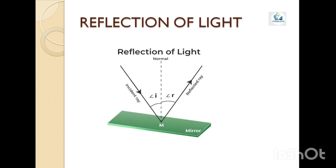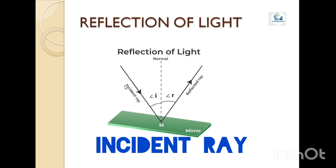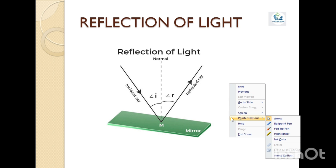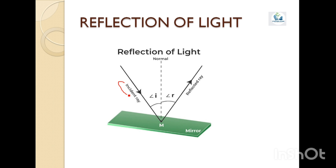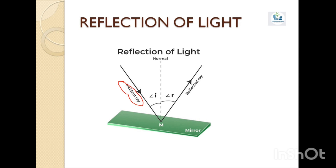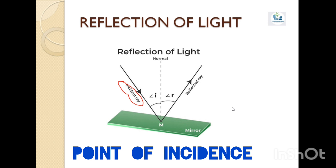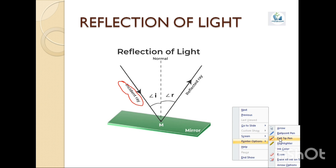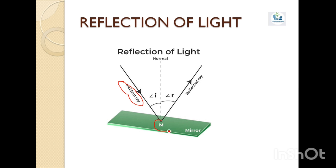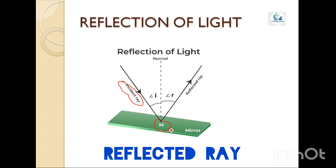Here in this diagram you can see the phenomenon of reflection of light from a plane mirror. The ray of light which falls on the mirror surface is called the incident ray. The point at which the incident ray falls on the mirror is called the point of incidence — here in this diagram, M is your point of incidence. The ray of light which is sent back by the mirror is called the reflected ray.